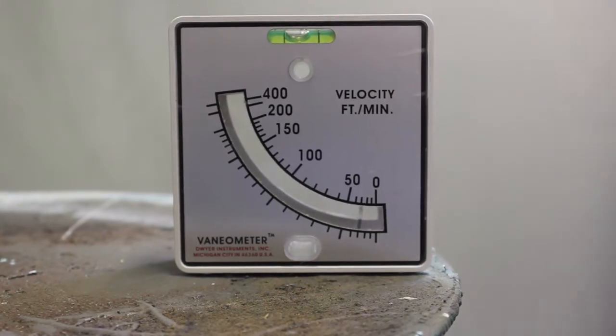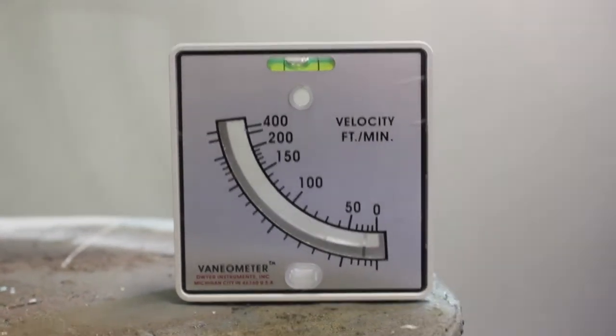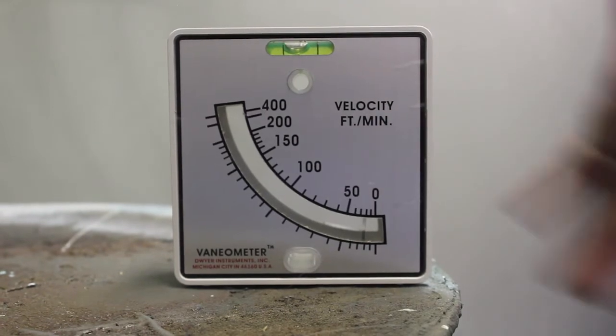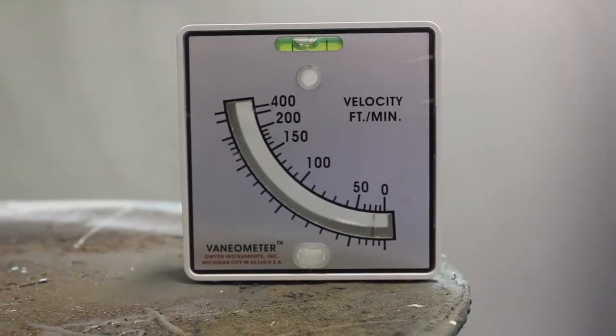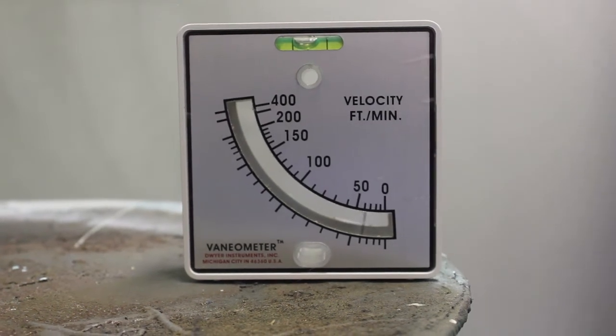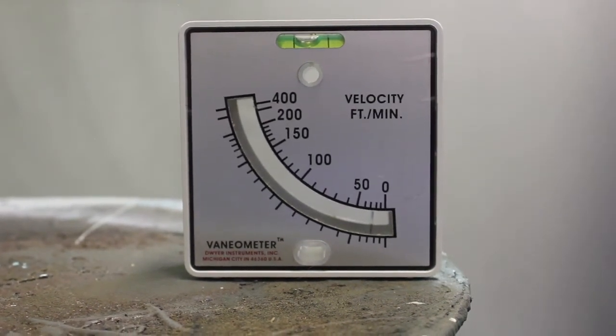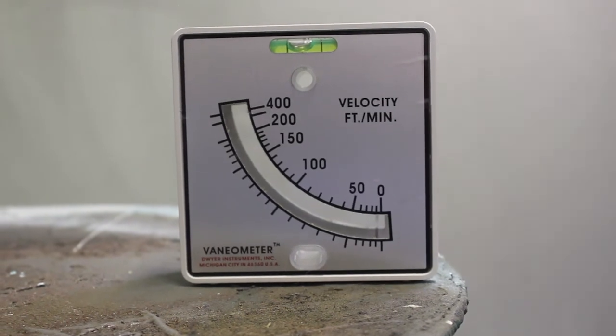The way the tool works, we want to make sure it's on a level surface and that this opening is allowing the air to pass through and hit the little vane, as it is called, inside this device. That vane movement shows us how much airflow we have in our booth.